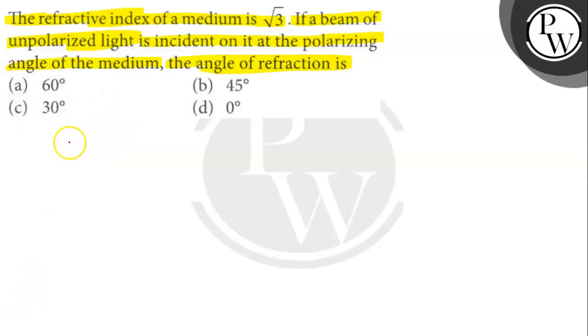Let's find out. So here mu is root 3. So tan ip is root 3. So ip will be tan inverse root 3. So your ip will be 60 degree.